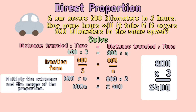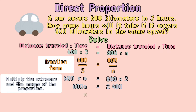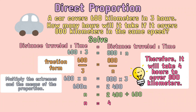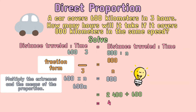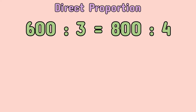What we are going to do next is divide 2,400 by 600. The answer is 4. Therefore, we can conclude that it will take 4 hours to cover 800 kilometers. So, this is an example of direct proportion.